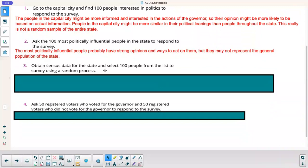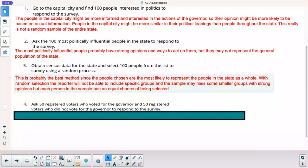Three, obtain census data for the state. Select 100 people from the list to survey using a random process. I think this is probably the best method since the people chosen are most likely to represent the people in the state as a whole. With random selection, the reporter will not be able to include specific groups, and the sample may miss some smaller groups with strong opinions, but each person in the sample has an equal chance of being selected.